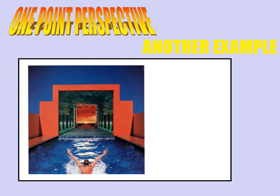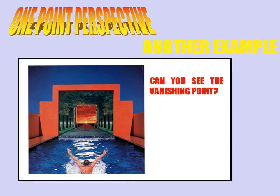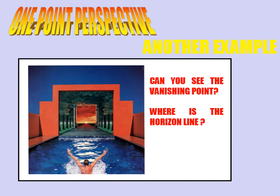Here's another example — it's a photograph. Again, it doesn't look straight away as if it's in perspective. But can you see where the vanishing point is? Where is the horizon line?